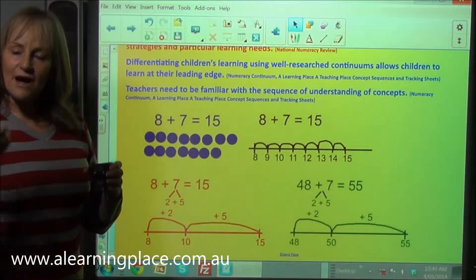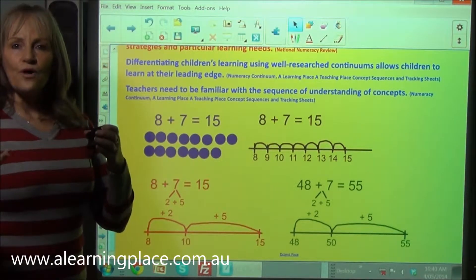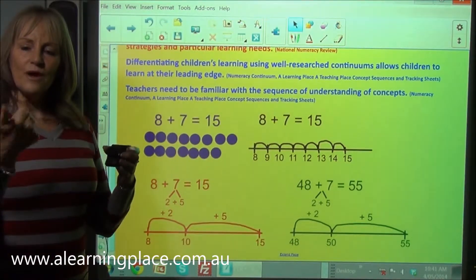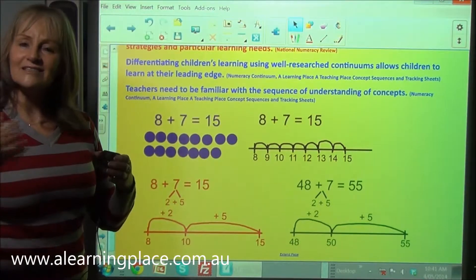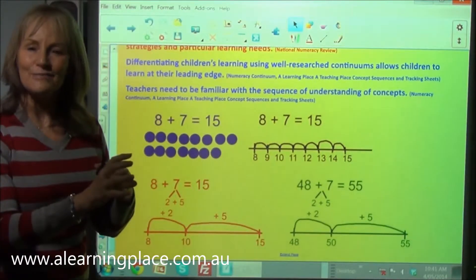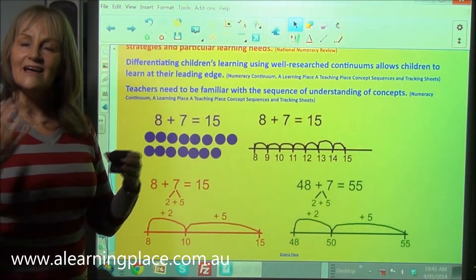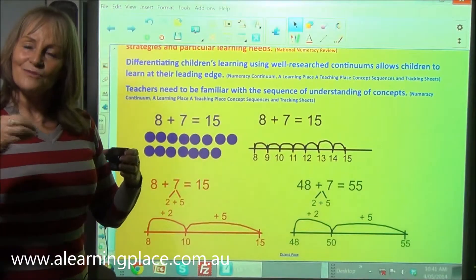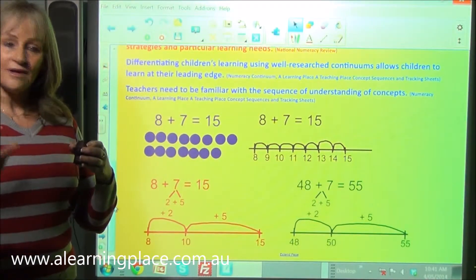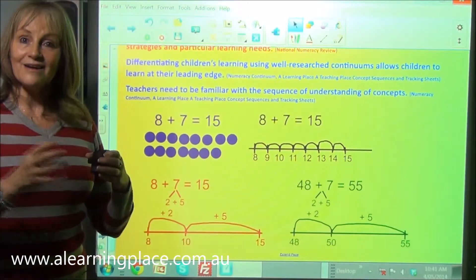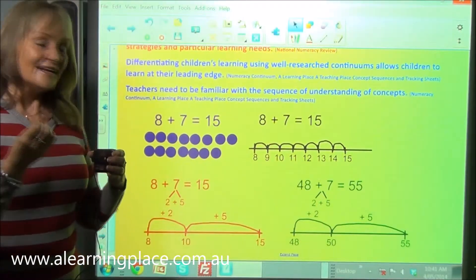Another reason is if I'm adding say four and three I'll go one two three four five six seven. Now I can't see the four and the three anymore I can only see the seven. So in that way I haven't really developed any understanding of four and three joined together make seven.